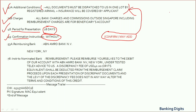Field 53A means the beneficiary's bank or presenting bank needs to claim payment from this bank by sending an MT742 SWIFT message — MT742 is a reimbursement claim SWIFT. Remember this is an optional field. If this field is not present, payment will be directly remitted by the issuing bank to the presenting bank, with no need to send a separate claim SWIFT.